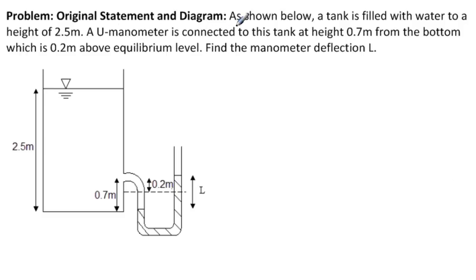The original statement and diagram is, as shown below, a tank is filled with water to a height of 2.5 meters. A U-manometer is connected to this tank at height 0.7 from the bottom, which is 0.2 above equilibrium level. Find the manometer deflection L, and we're given this diagram. Well, the 2.5 meters is okay. This is telling us that it's an open tank. The connection at 0.7 above the bottom is okay, and then the rest is kind of very confusing.